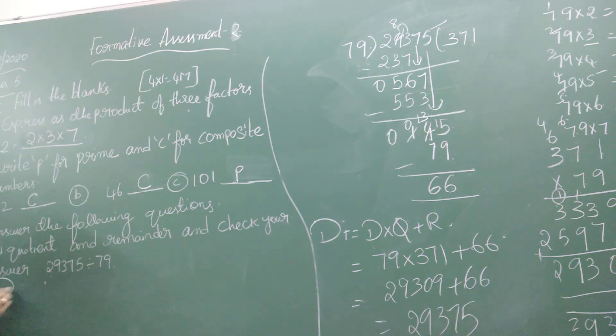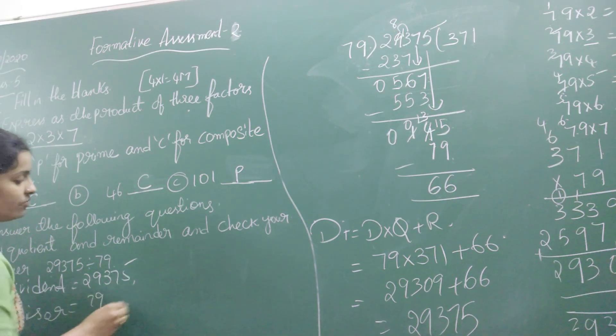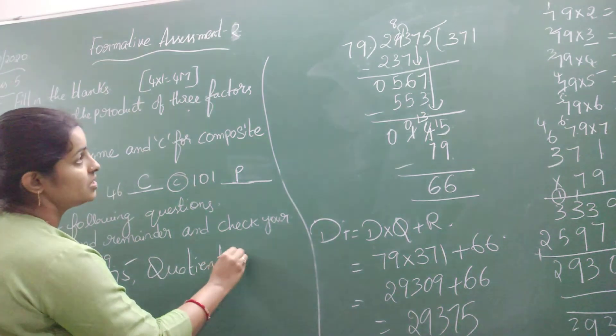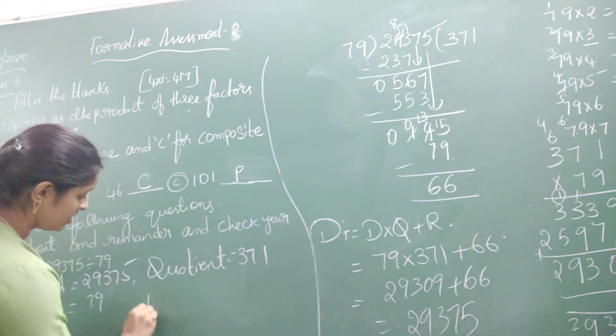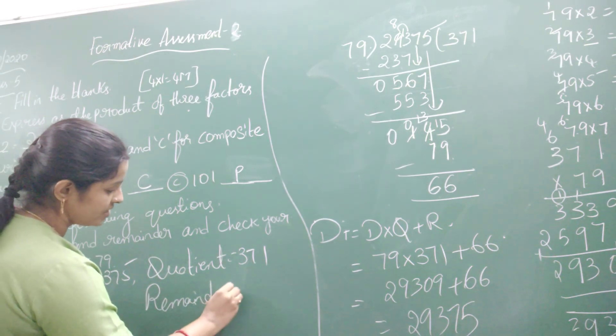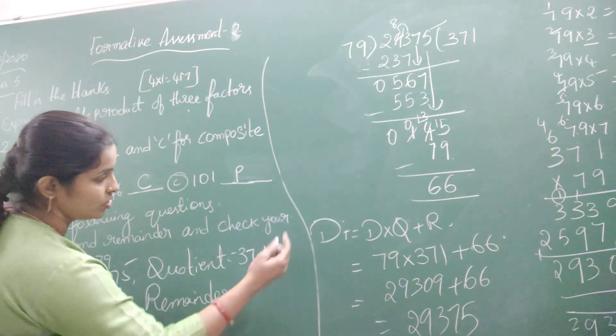Now let us write what is dividend. The dividend is 29,375. What is the divisor? Divisor is 79. We got the quotient as 371, and the remainder is 66.